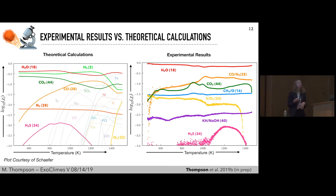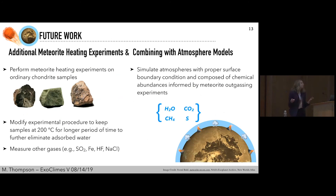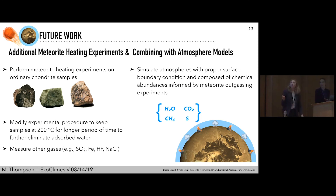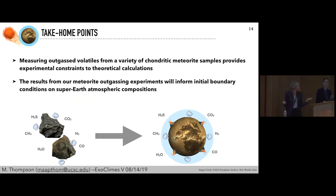To close, I want to briefly discuss some future work. This includes performing additional meteorite heating experiments focusing on ordinary chondrites. I also want to modify our experimental procedure to reduce adsorbed water — holding at 200°C for longer — and to measure other gases like sulfur dioxide and water that are predicted in chemical equilibrium calculations. Ultimately, we want to place these results in the larger context of our exoplanet models: simulating atmospheres with a proper surface boundary condition, a prescription to treat outgassing and secondary atmospheres, with abundances informed by our experimental results. The two take-home points are: measuring outgassed volatiles from a variety of chondritic meteorite samples provides experimental constraints to theoretical calculations, and ultimately these outgassing experiments will help inform the initial boundary conditions on low-mass planet atmosphere compositions.